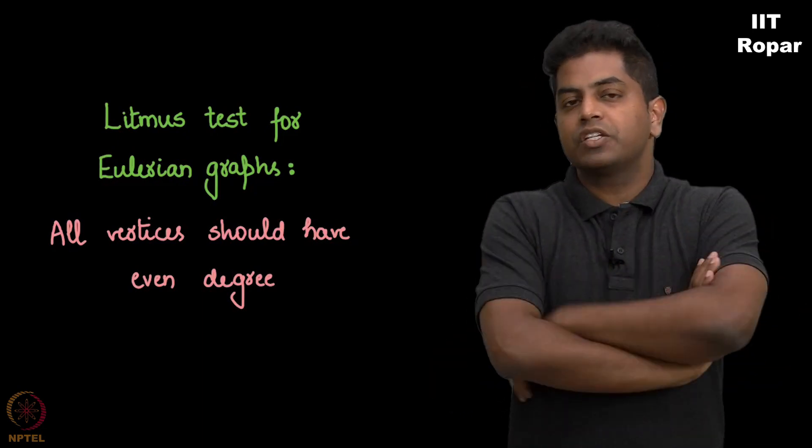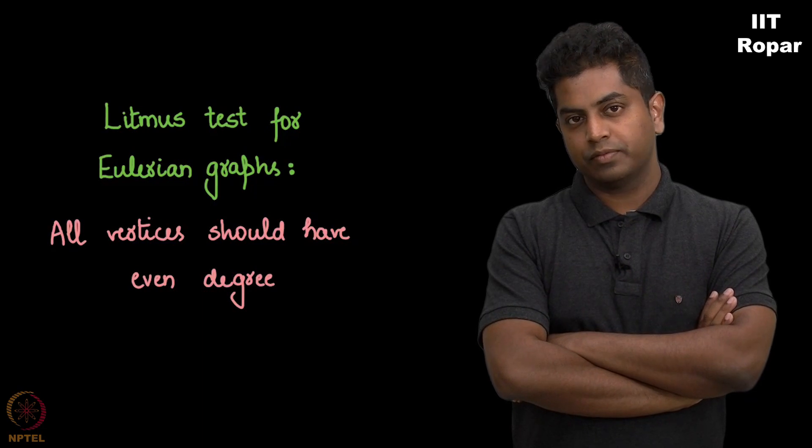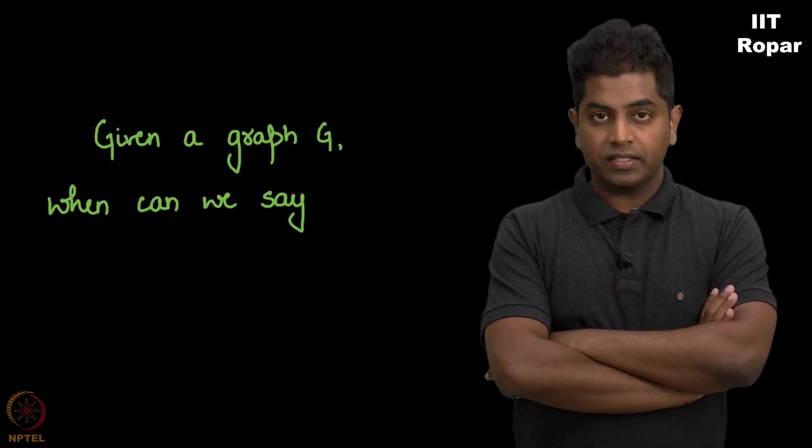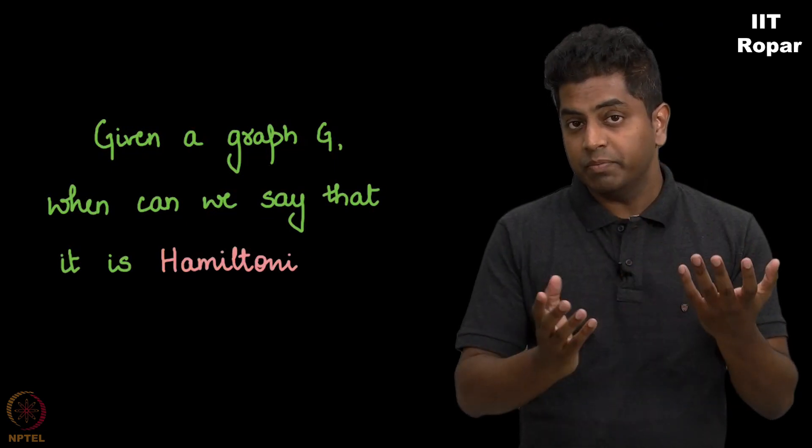Now can we think of some such thing for a Hamiltonian graph? Given a graph G, when can we say that it's Hamiltonian? Is there a litmus test?